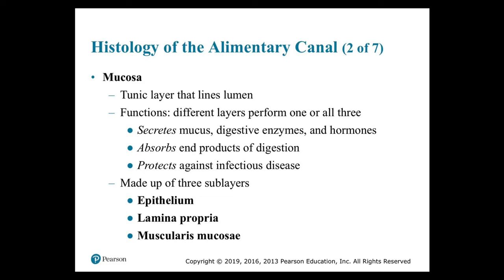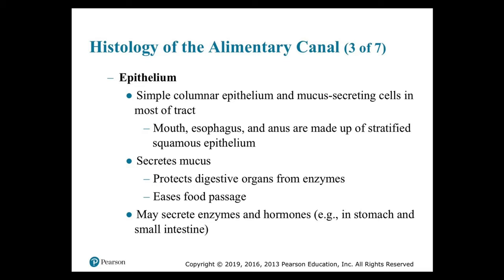The mucosa is made up of three sub-layers: the epithelium — moistened by glandular secretions — the lamina propria of areolar tissue, and the muscularis mucosae. The mucosal epithelium is either simple or stratified, depending on its location and the stresses to which it is subjected. The oral cavity, pharynx, and esophagus — where mechanical stresses are most severe — are lined by stratified squamous epithelium, whereas the stomach, small intestine, and almost the entire large intestine have simple columnar epithelium containing goblet cells.